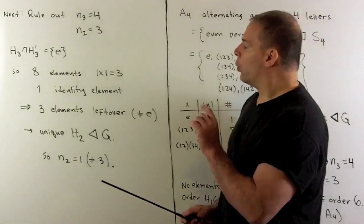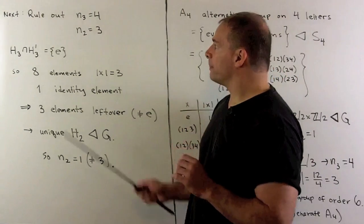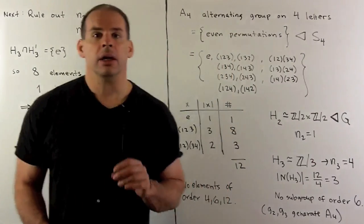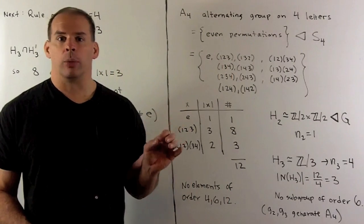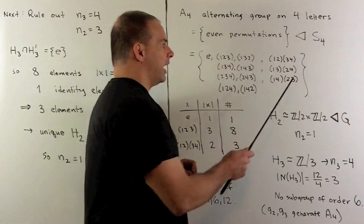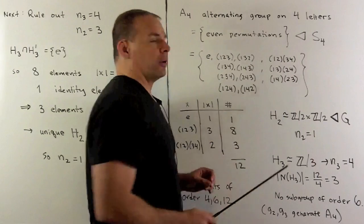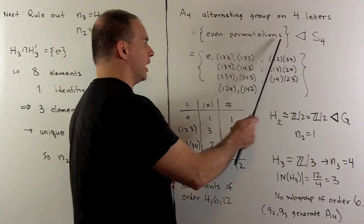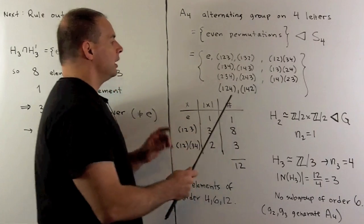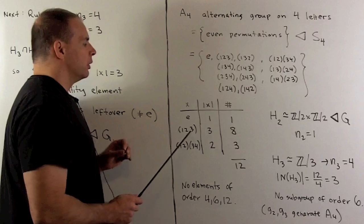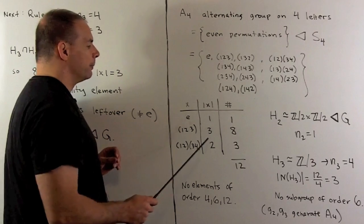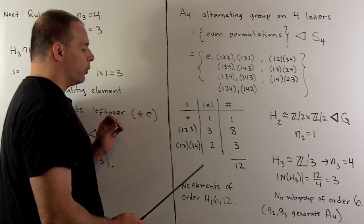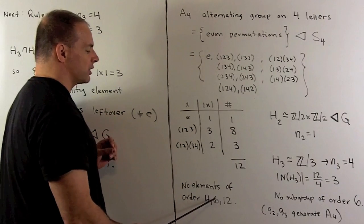There's only going to be one group up to isomorphism with n sub 3 equal to 4 and n sub 2 equal to 1. That group is the alternating group on four letters, A_4. If we take the symmetric group on four letters, A_4 consists of the subgroup of even permutations. Listing all of these, we note we have 1 element of order 1, 8 elements of order 3, and 3 elements of order 2. Note we have no elements of order 4, 6, or 12.